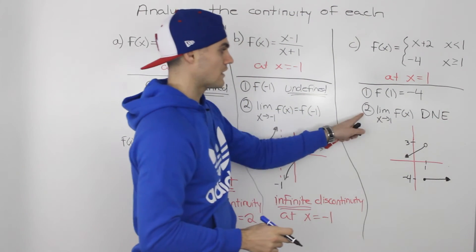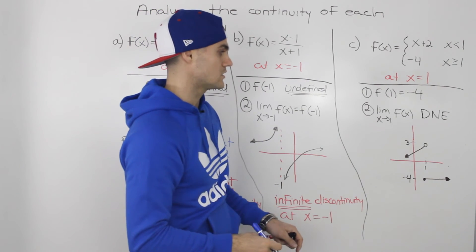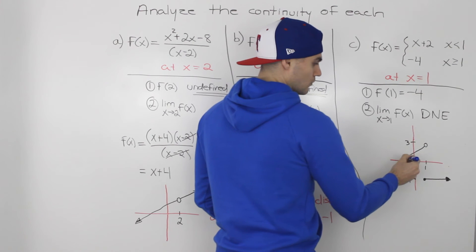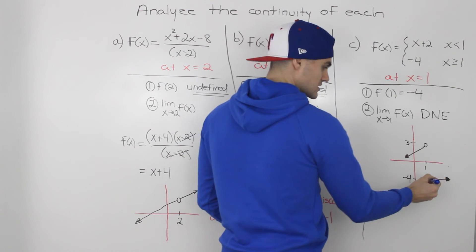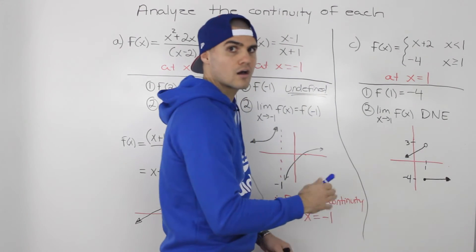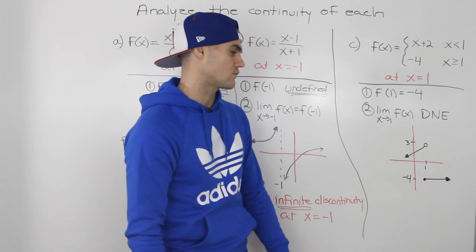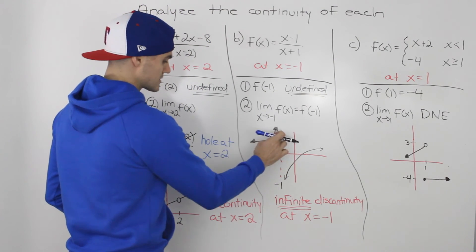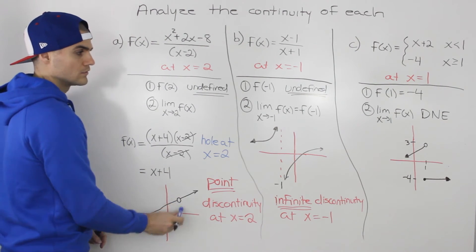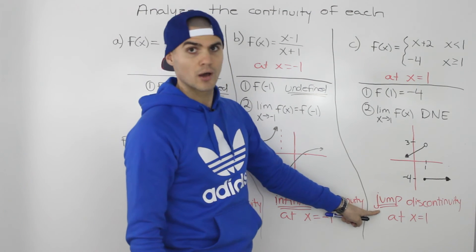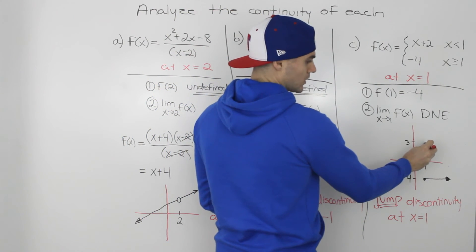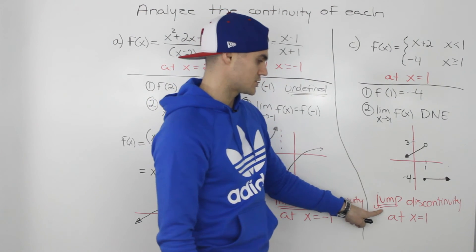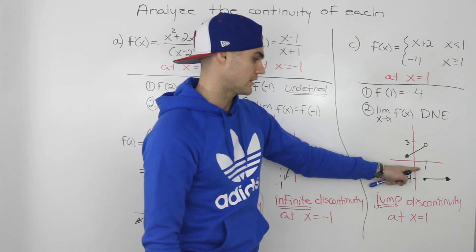Because the limit doesn't equal f of 1, the second condition fails, and the function is discontinuous at x equals 1. You can see it clearly on the graph: tracing a pencil from negative infinity, once you reach x equals 1 you have to lift it and jump to a new position. This discontinuity is different from the previous two — it's not a hole or a vertical asymptote. This type is called jump discontinuity, because it's as if you're on one piece of the function and have to jump to a new function at x equals 1.